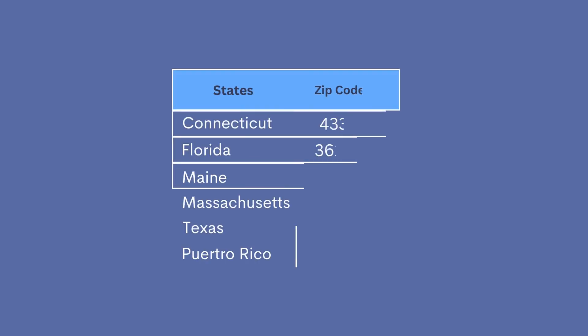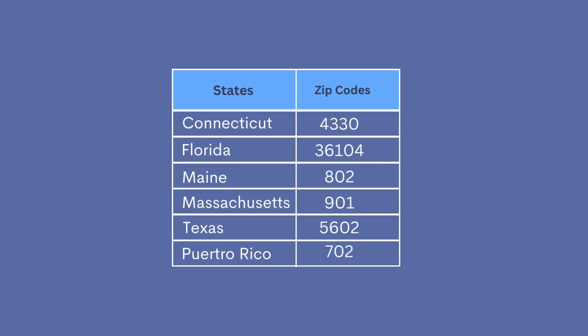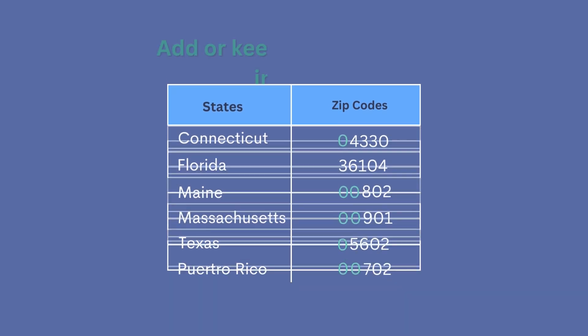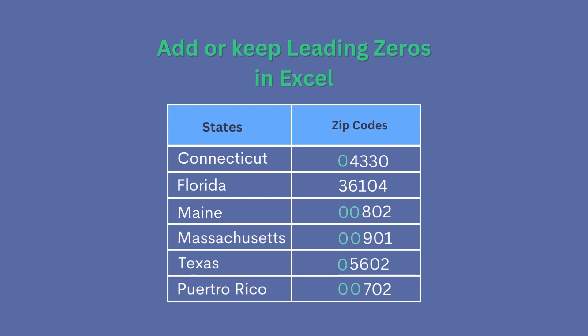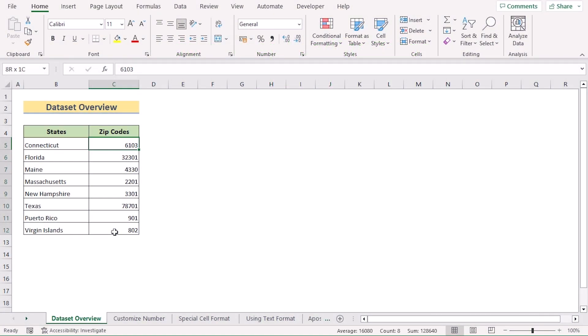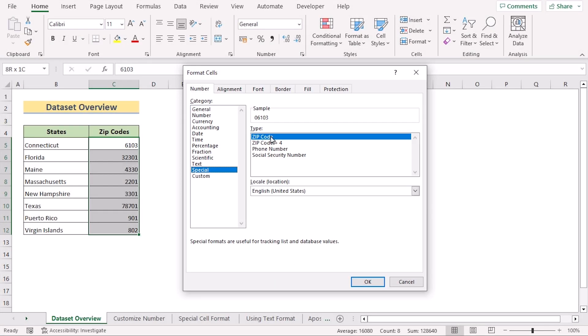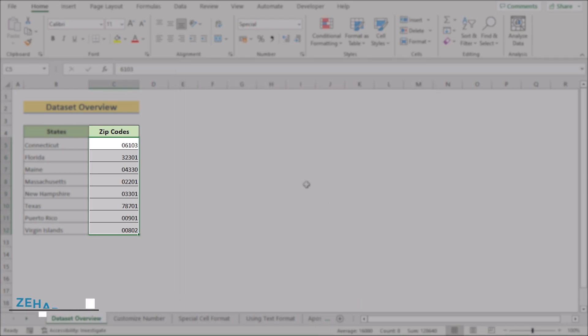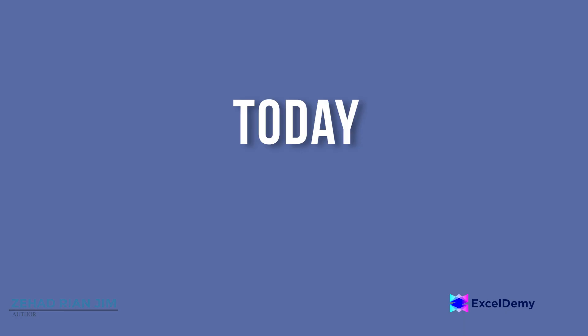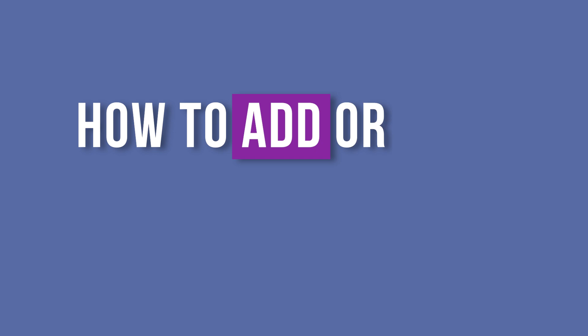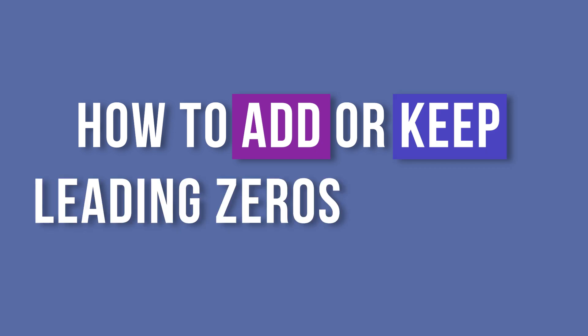Hello everyone. If you have a dataset where you need to maintain records of zip codes or security numbers, then you know how important it is to add or keep leading zeros in Excel. But you can easily do this within a second. This is Jihadri Anjim from Excel Demi, and today we will learn several methods on how to add or keep leading zeros in Excel.